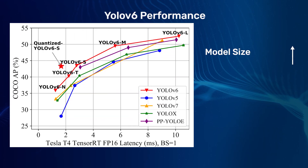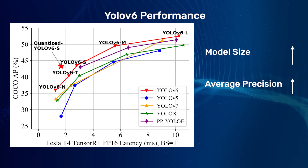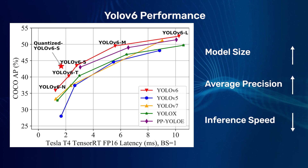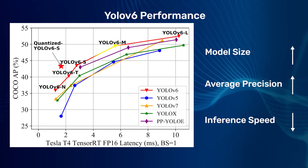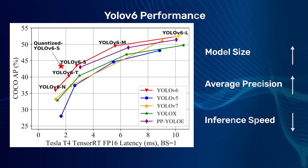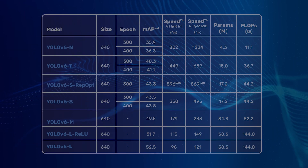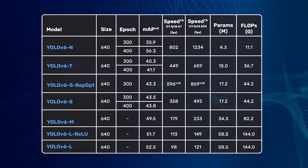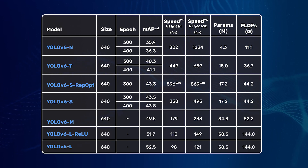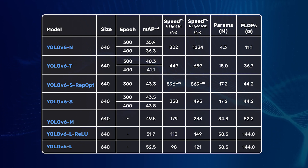As the model size increases, the average precision also increases, but the single image inference speed decreases. As inferred from the graph, YOLO v6 constantly outperforms other YOLO models. As the training epochs increase, there is a considerable increase in the MAP value as well. The continuous small model runs faster than its non-continuous counterpart, with a little trade-off in the MAP score.